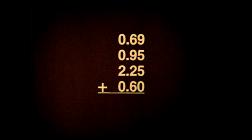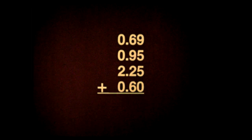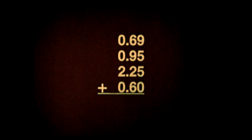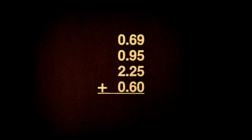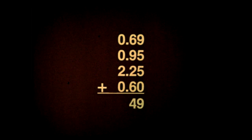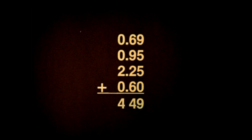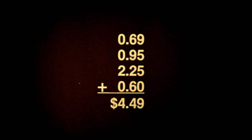You know how to add whole numbers, so we won't go through the process. Can you look at these figures and make a rough estimate of what the sum will be? Something more than one dollar and less than ten dollars? Something between four and five dollars. If we add in the usual way, that estimate will help you decide where the decimal point should go. And it's a good way to check the figures in your final answer too. Four dollars and forty-nine cents.